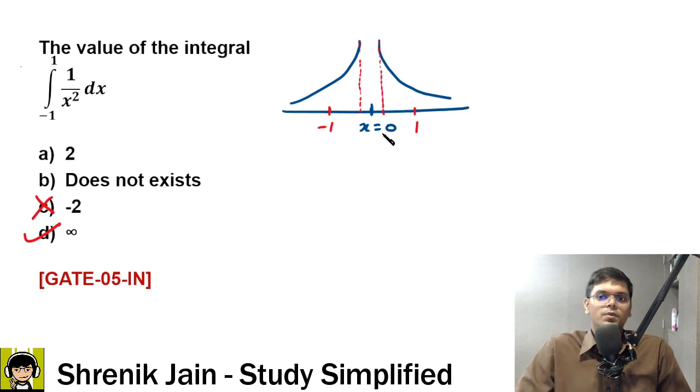So we have to go a step back here. We have to approach from x equals 0, and then only we have to integrate because this is improper integration, right? So we have to make it proper. And for that, integral minus 1 to 0 minus h, and then we have dx upon x squared, plus integral...